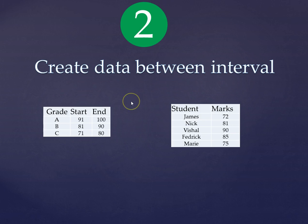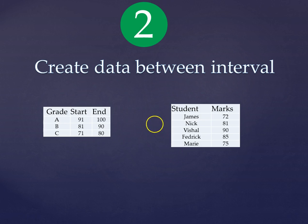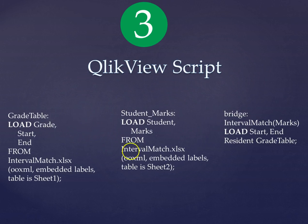That's the example shown in the next slide. We have the grade table with start marks and end marks, and then the student table with a few student names and the marks they have received in their academic session. We will see how we can create a link between these two tables using the interval match function and then populate the grades for relevance.